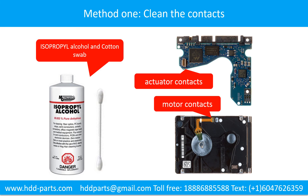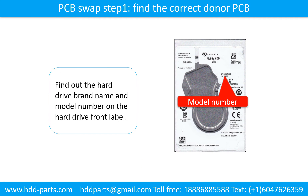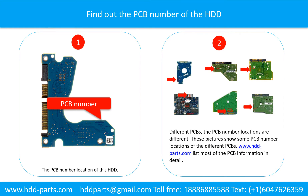Cleaning and repairing the contacts on the PCB board and the hard drive can fix the problem caused by the poor connection between the PCB board and the hard drive. Fixing the hard drive printed circuit board method 2: the printed circuit board swap. Step 1: find the correct donor printed circuit board. Find out the hard drive brand name and the model number on the hard drive front label. Find out the printed circuit board number of the hard drive.